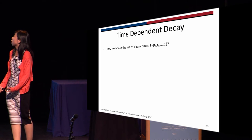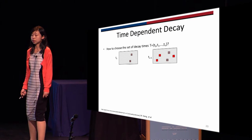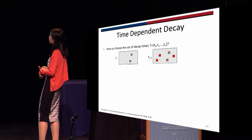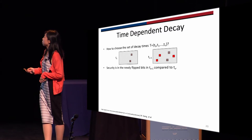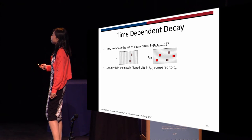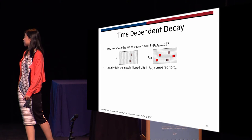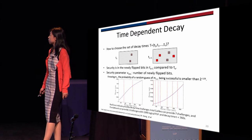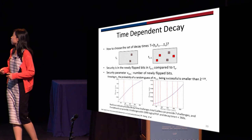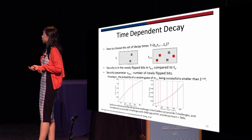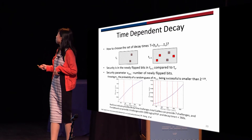There still remains the question of how to choose the set of decay times. For two measurements on the same logical PUF at different decay times, bits that flip at a shorter decay time will also flip at a longer one. So if the attacker knows the measurement from a previous decay time, they also know some bit flips for longer decay times. The security only lies in the newly flipped bits for longer decay time. We introduce a security parameter — the number of newly flipped bits — and there should be enough newly flipped bits so that an attacker's probability of successfully guessing the measurement is very small.